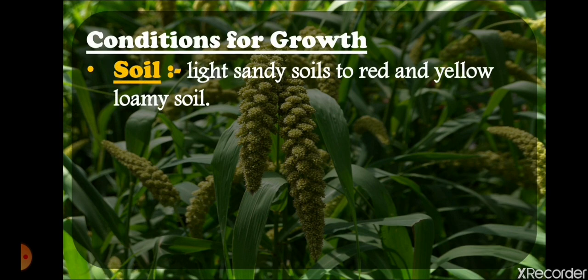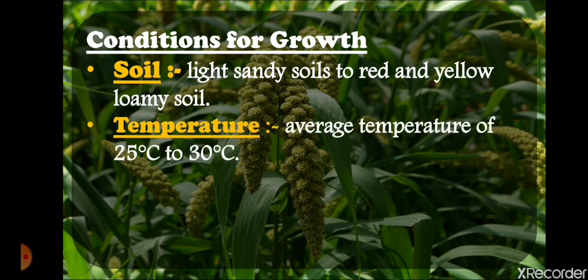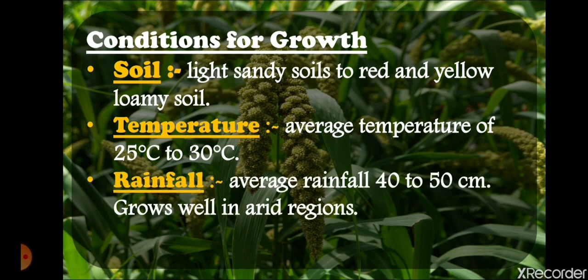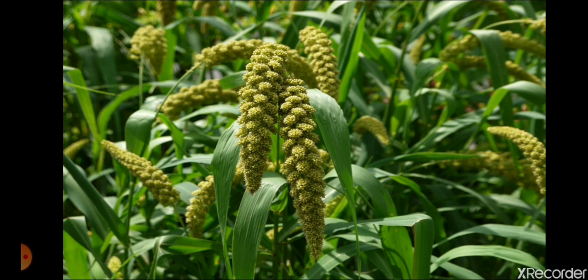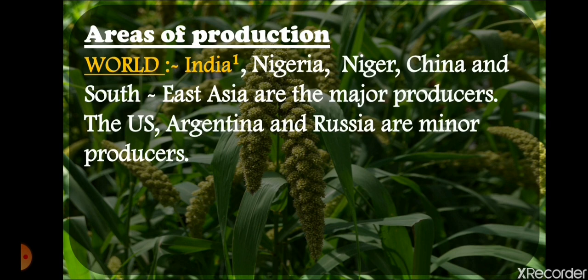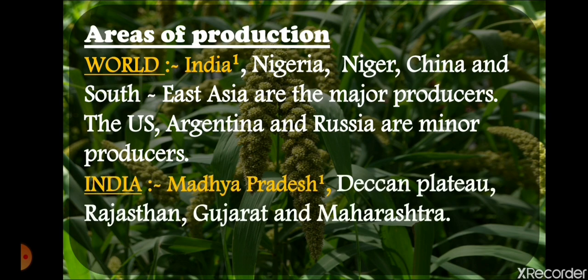Ideal conditions for growth of millet: soil should be light sandy soil, as it can grow in dry areas with very less rainfall; soil can also be red, yellow, or loamy. Temperature is average 25 to 30 degrees Celsius. Rainfall requirement is 40 to 50 centimeters, and it can grow well even in arid, dry regions. Worldwide, India is the leading producer of millet — all three millets, jowar, bajra, and ragi, can be grown in India. Nigeria, Niger, China, and South East Asia are also major producers. In India, Madhya Pradesh is the largest producer, followed by the Deccan Plateau, Rajasthan, Gujarat, and Maharashtra.